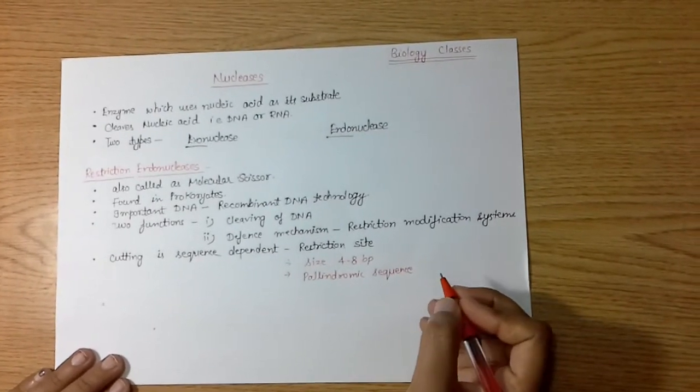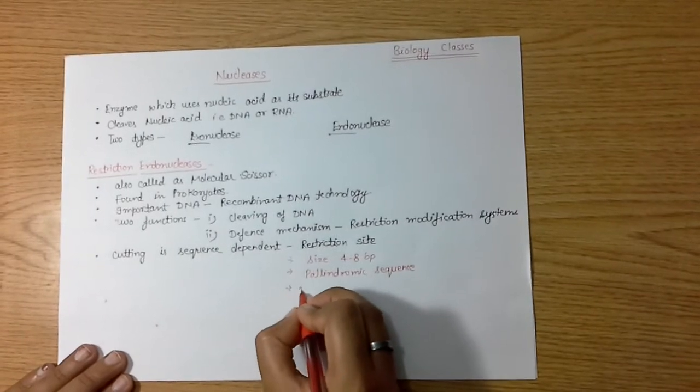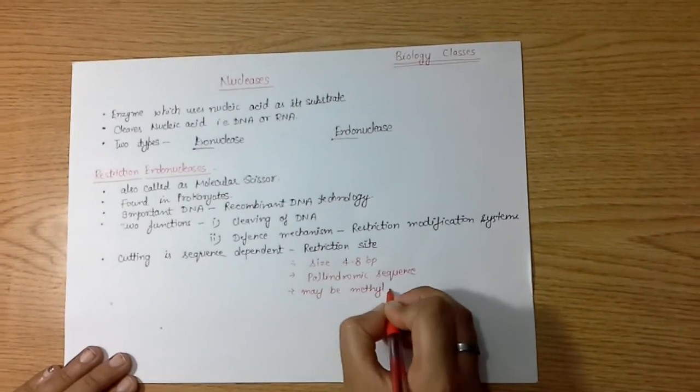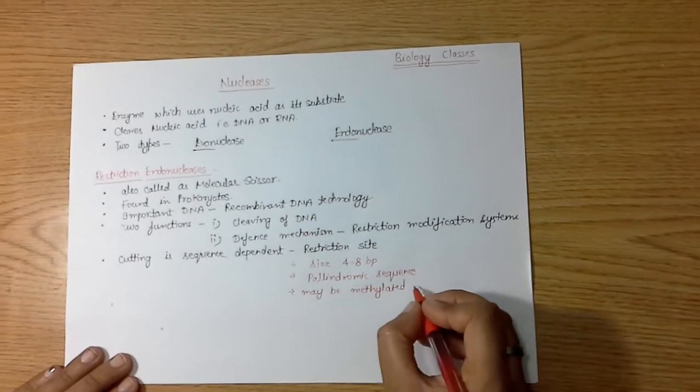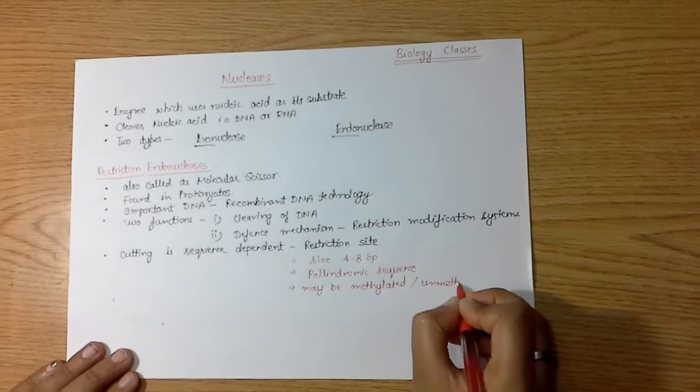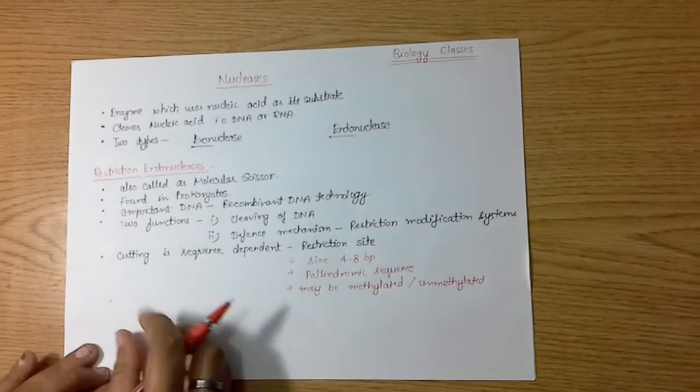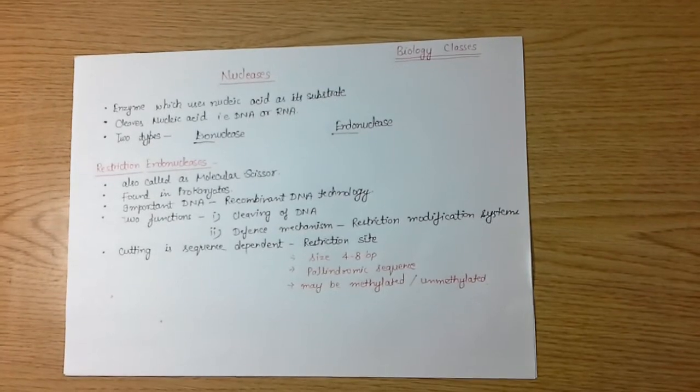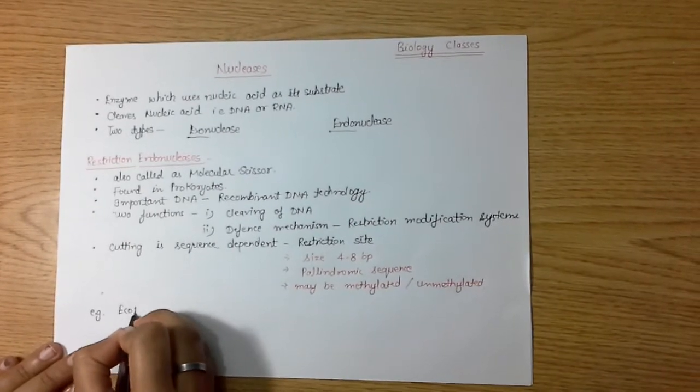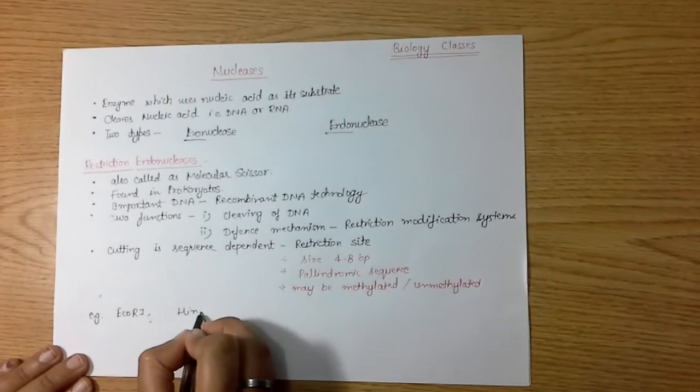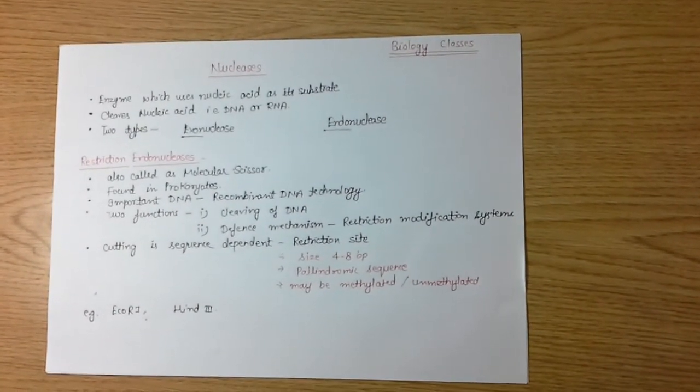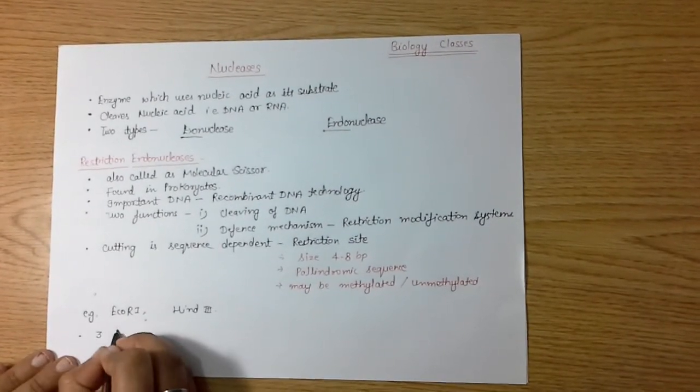Next thing: the restriction site may be methylated or non-methylated. This is a simple topic we have learned in our 12th or 11th examination. So the cutting by restriction enzyme is sequence dependent. We have many examples of restriction enzymes like EcoRI and HindIII.